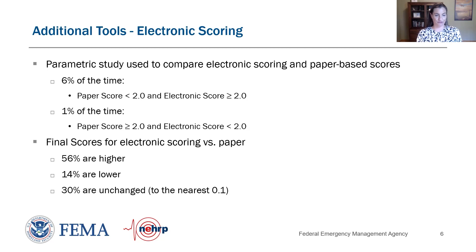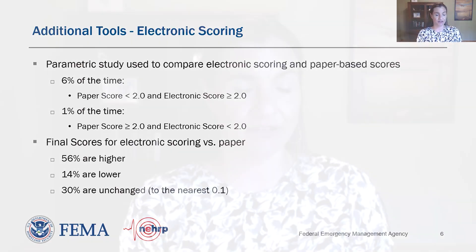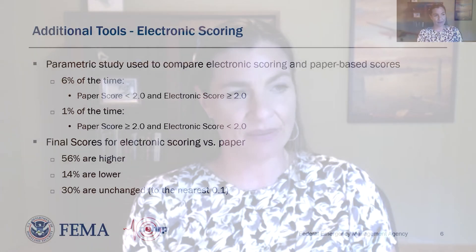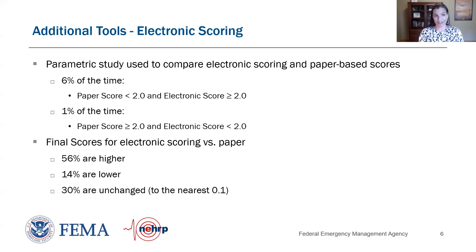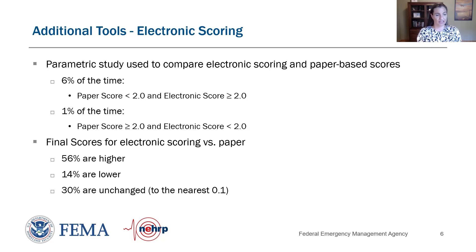A parametric study was performed to compare scores developed from electronic scoring versus paper-based scoring. In that study, 6% of the time the paper score was less than 2 and the electronic score was greater than 2 — meaning 6% of the time a building that would have been sent to further evaluation showed up above the cutoff score electronically. And 1% of the time, the paper score was greater than 2, but the electronic score indicated the building does need further evaluation.